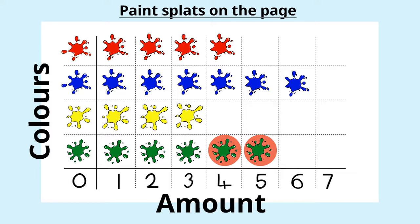Let's have one more of those. How many more blue splats than red splats are there? Pause the video and write down your answer. Well, there were six blue splats and only four red splats. So the difference again is two splats.